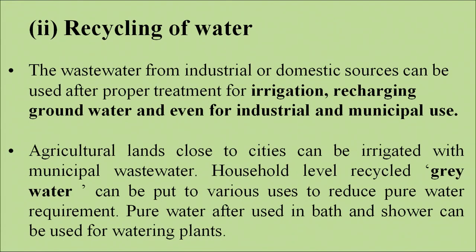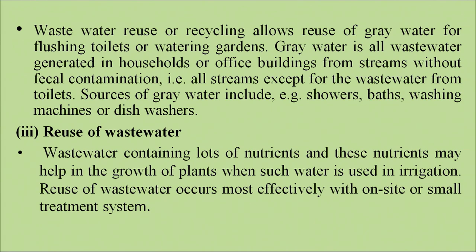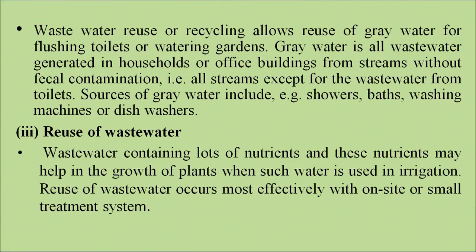Next is recycling of water. Wastewater from industrial or domestic sources can be used after proper treatment for irrigation, recharging groundwater, and even for industrial and municipal use. Agricultural lands close to cities can be irrigated with municipal wastewater. Household-level recycled grey water can be put to various uses to reduce pure water requirements — water used in baths and showers can also be used for watering plants. Grey water is all wastewater generated in households or office buildings from streams without fecal contamination. Sources of grey water include showers, baths, washing machines and dishwashers.